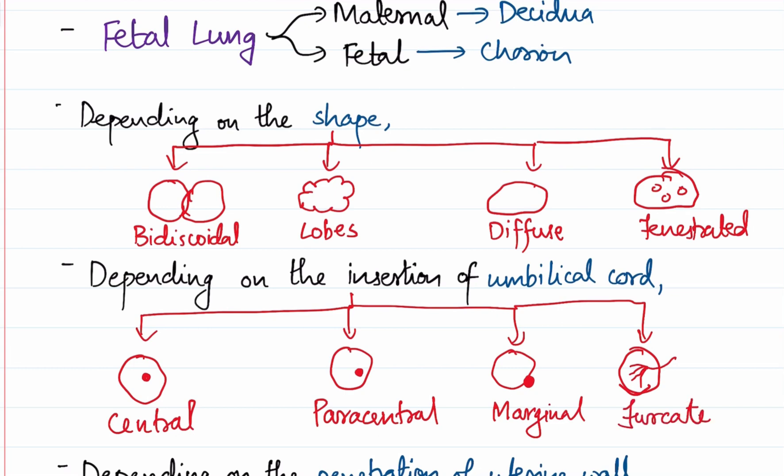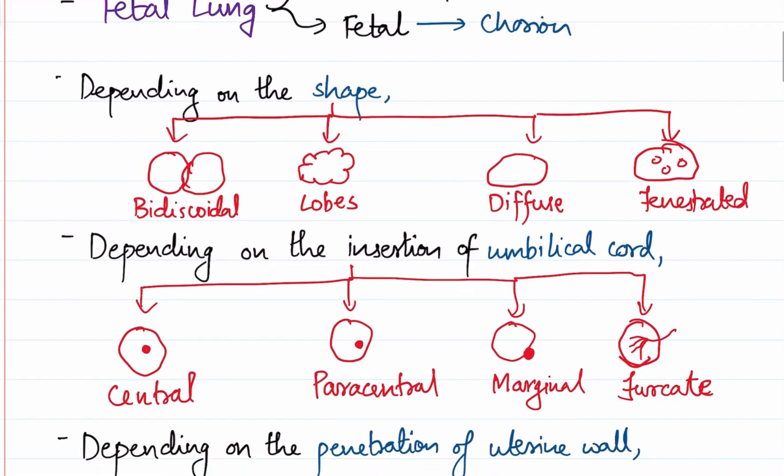So these are some of the important classifications. There are still other types such as velamentous placenta and so on, but we will focus on these four types.